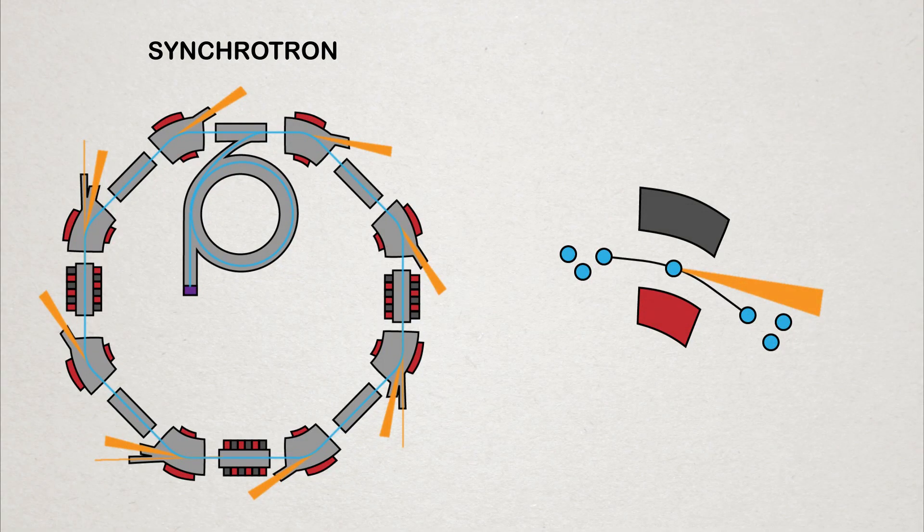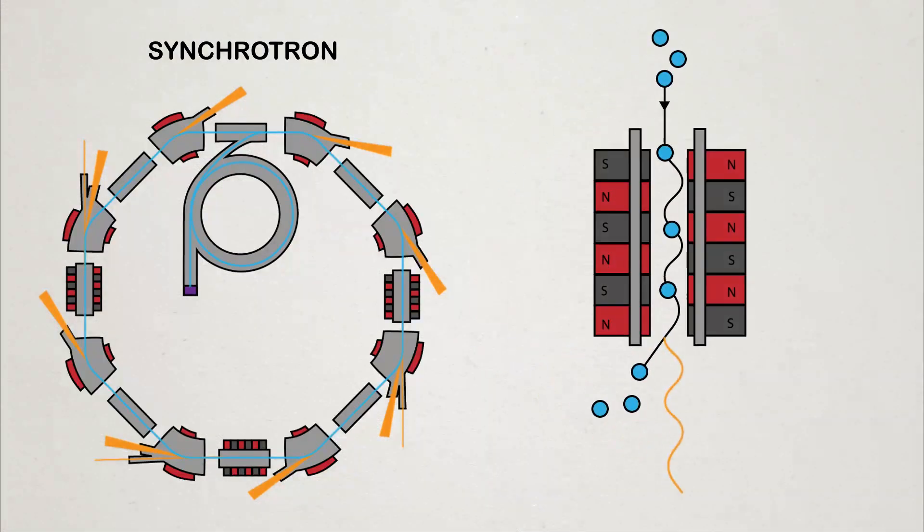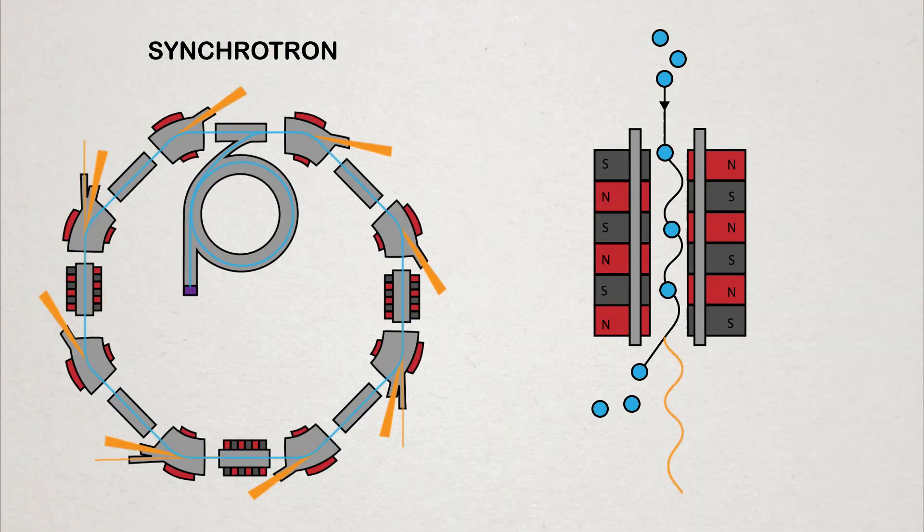For bending magnets, this is a large range of different wavelengths of X-ray radiation. Undulating magnets are a little different. They change direction constantly, forcing the electron to wiggle their way through. These magnets end up producing an extremely narrow beam of high intensity light.